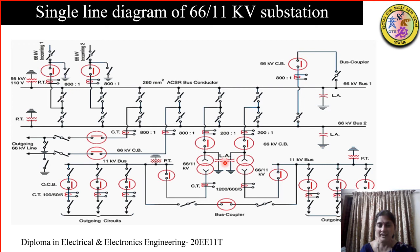Here we have a lightning arrestor and a CT with a ratio of 200 to 1. This single line diagram represents the electrical connections of the substation. We will see it in detail in the next slide.